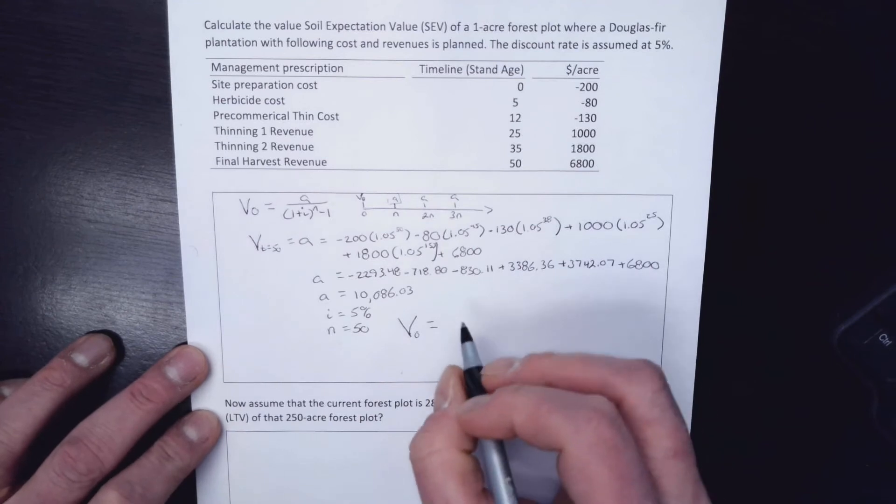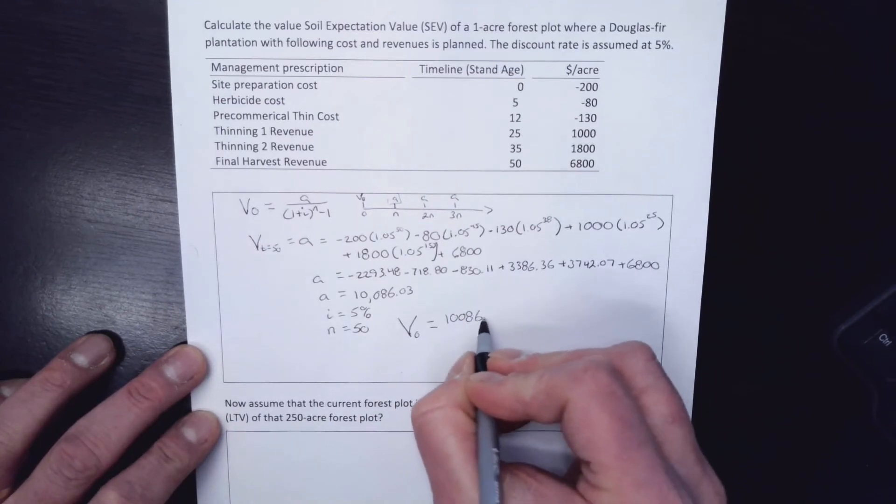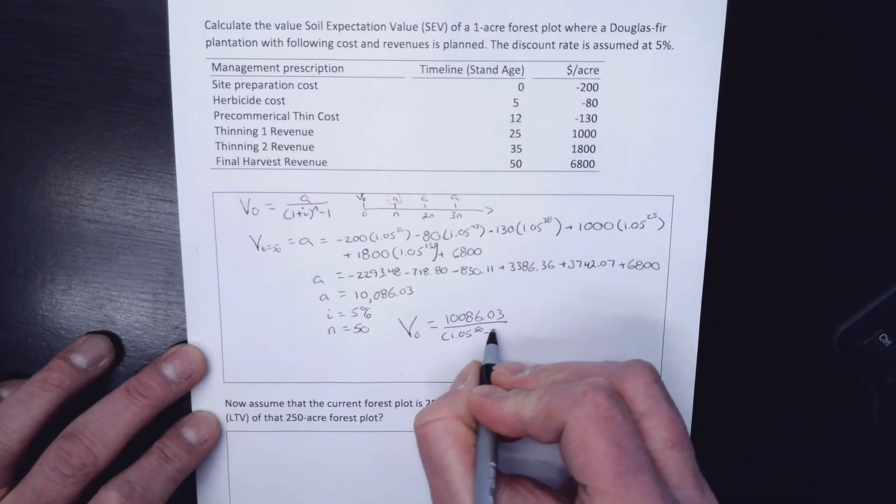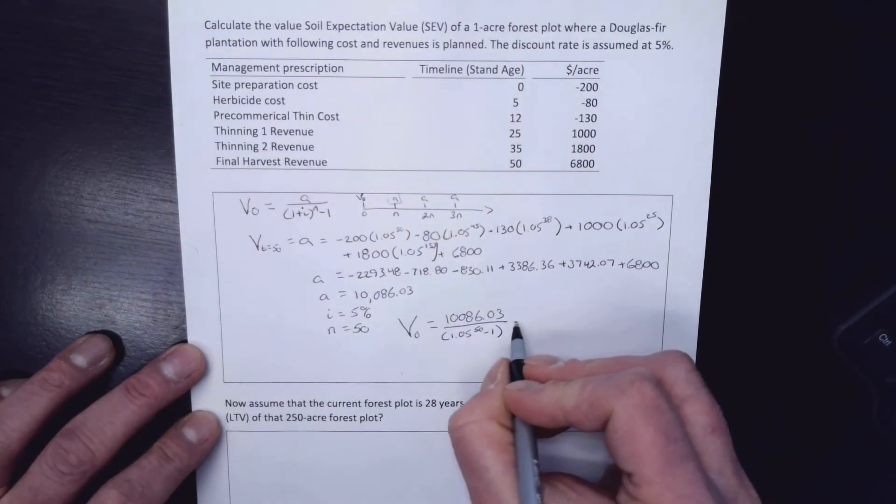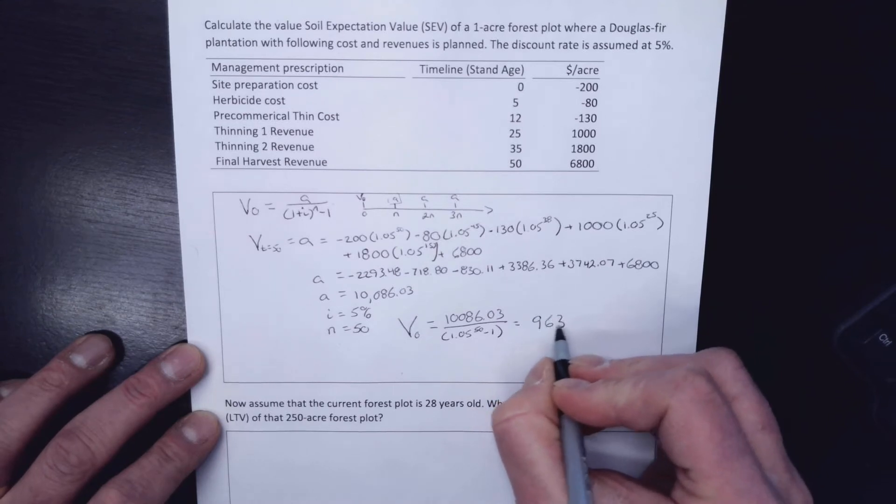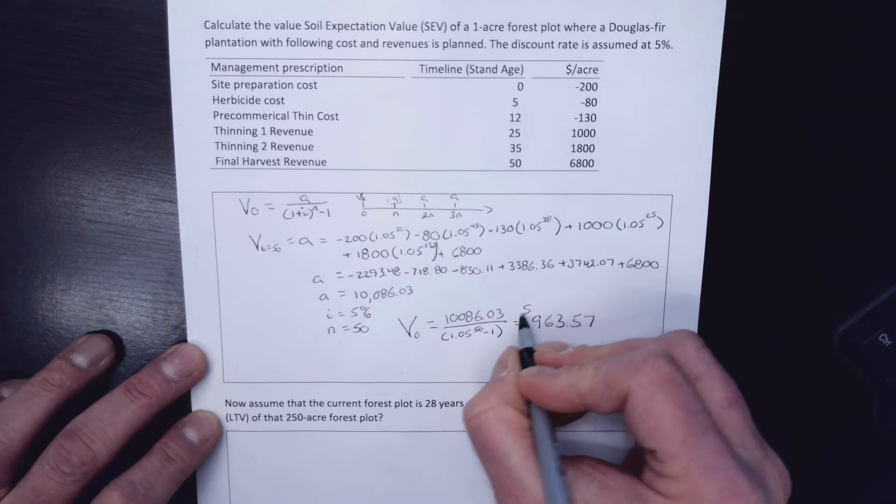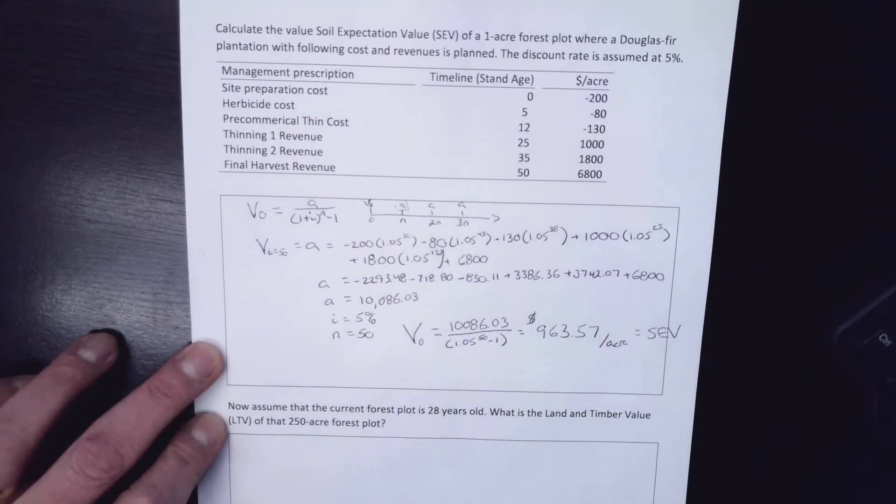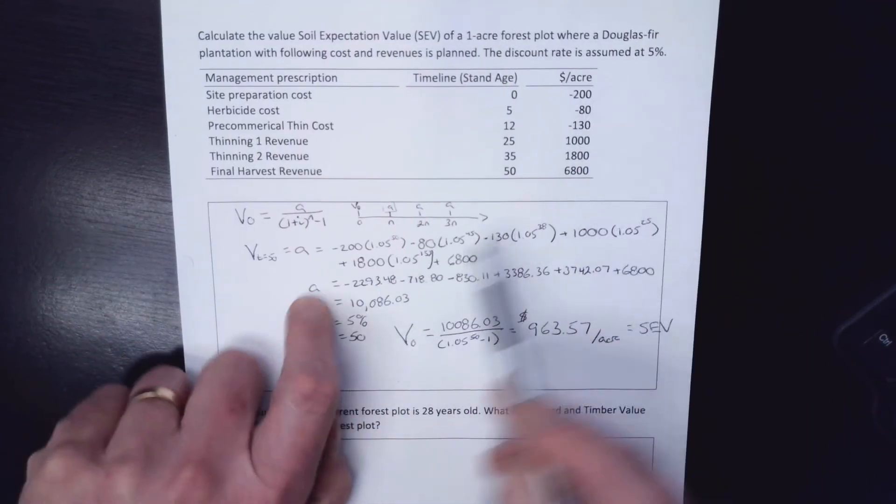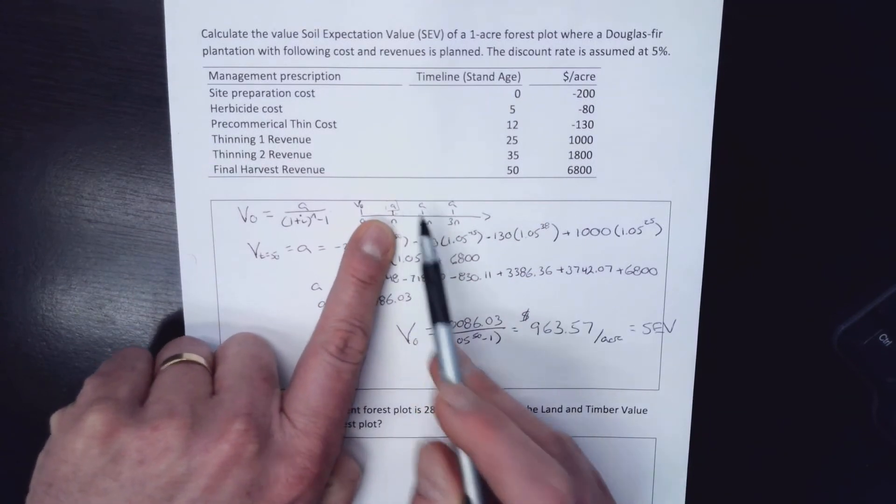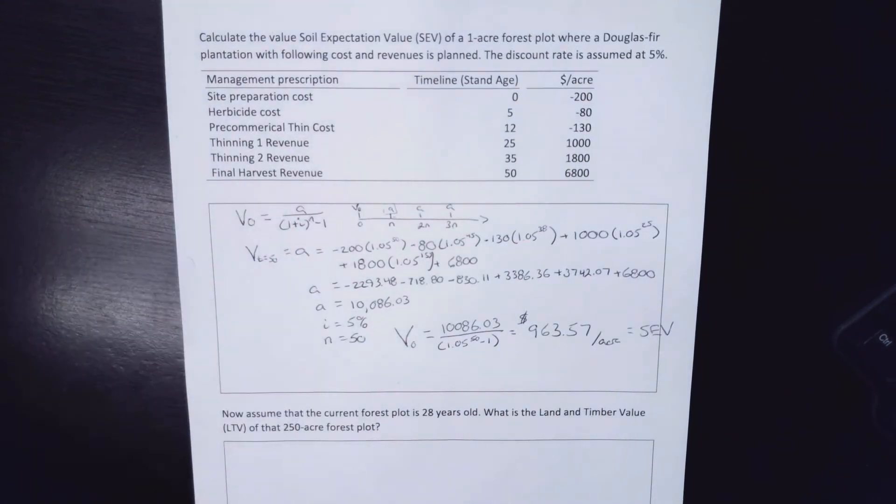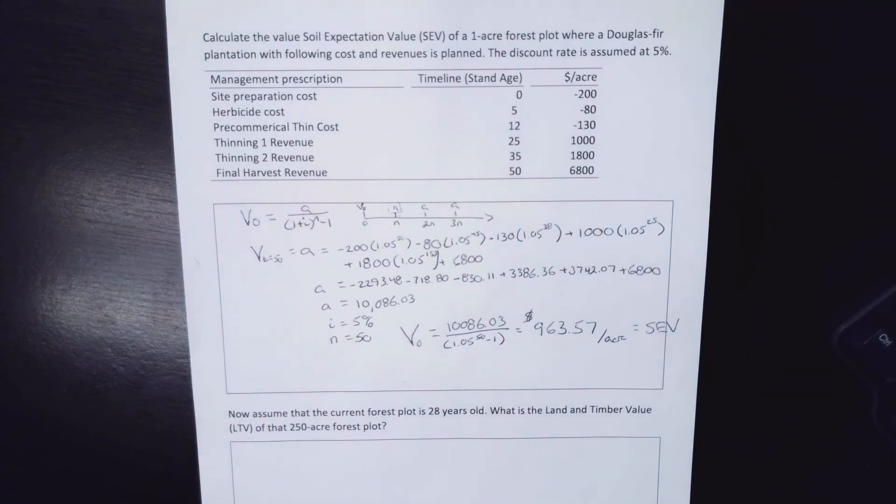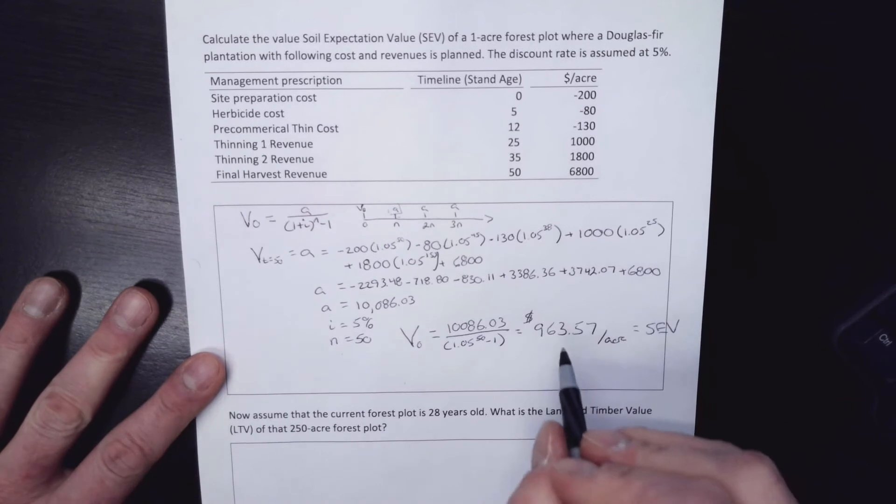So when I plug that into my equation from right here, that gives it a perpetual periodic. I have $10,086.03, got that over 1.05 to the 50 minus 1 like that. And that equals $963.57. And that would be dollars per acre when we're done. And that is my soil expectation value, because I put all of these other ones out to the end where that A is. I only have to do this equation, which this is one of the easier, more difficult equations. I only have to do it once with that A. And that gives me my bare land value.